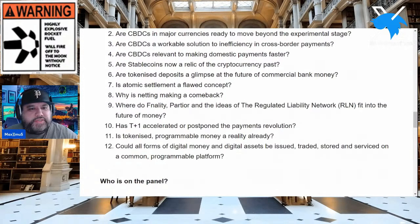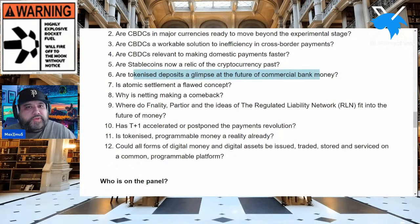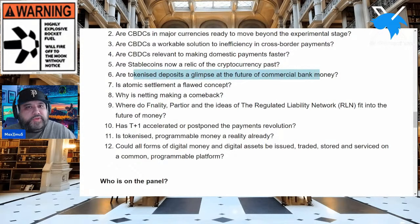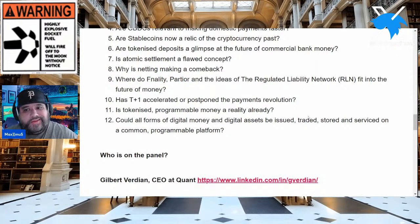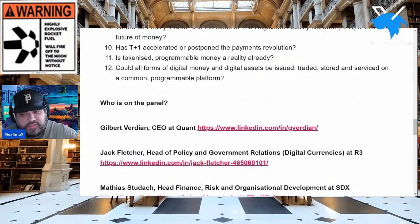Some of the key areas to pay attention to: are tokenized deposits a glimpse of the future or the future of commercial bank money? Is atomic settlement a flawed concept? Why is netting making a comeback? The highlight for tonight is: where do finality, the parser network, and the ideas of a regulated liability network — RLN — fit into the future of money? And could all forms of digital money and digital assets be issued, traded, stored, and serviced on a common programmable platform?